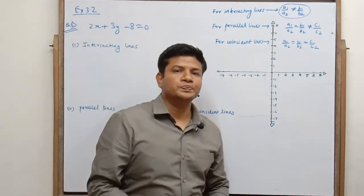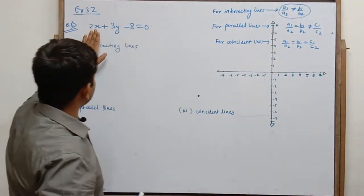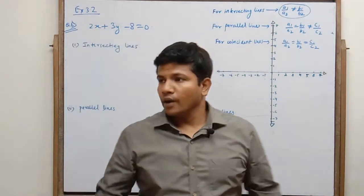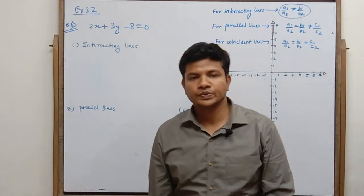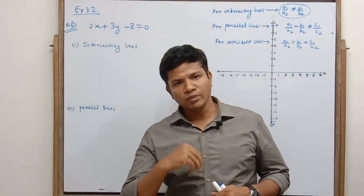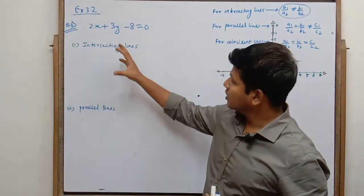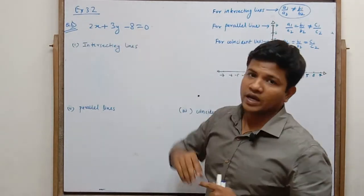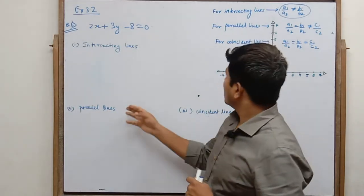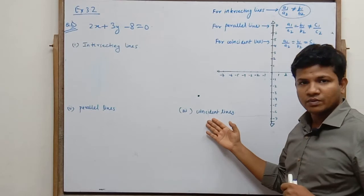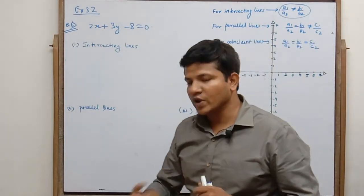Now Exercise 3.2 question number 6. In question number 6, they have given us an equation: 2x + 3y - 8 = 0. They have asked us to frame equations which can give an intersecting line, a parallel line, and a coincident line. So we have to frame these equations.